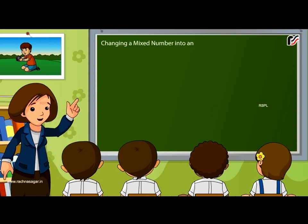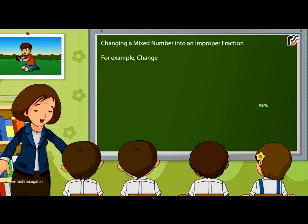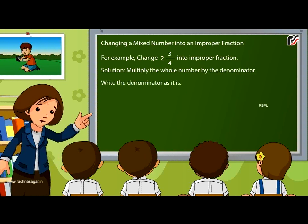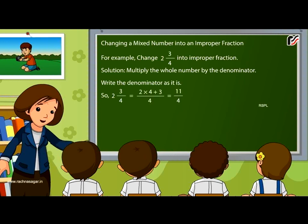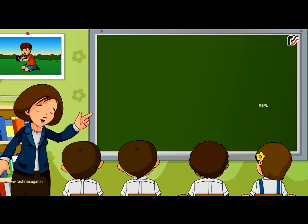Changing a mixed number into an improper fraction. For example, change 2 and 3 by 4 into an improper fraction. Solution: multiply the whole number by the denominator and write the denominator as it is. So 2 and 3 by 4 is equal to 2 multiplied by 4 plus 3, whole divided by 4, which equals 11 by 4.